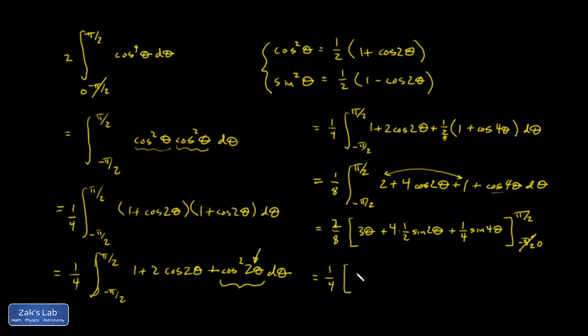So 2 over 8 reduces to one-fourth. Plugging in the upper limit, I end up with 3 times pi over 2, 3 pi over 2. When I plug in pi over 2 to this, I end up with 2 times pi over 2 which is pi, but the sine of pi is zero, so that one vanishes. And the sine of 4 times pi over 2, well, the sine of 2 pi is zero, so that one vanishes. So it looks like the whole thing comes out to 3 pi over 8.